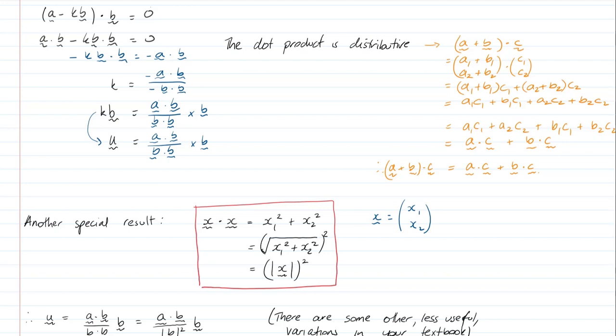Which is equal to the square root of X1 squared plus X2 squared, all squared. This is where we're heading because that's equal to the magnitude of X all squared. So, X dot X is equal to the magnitude of X all squared. This is going to be an important result given that our formula currently has B dot B in it.